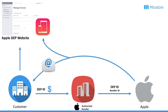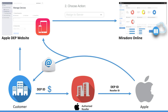As soon as the devices are registered with your DEP account, you can log into the DEP website, choose the devices, and assign them to an MDM server, for instance Miradol Online. What's really great about this is that this process actually happens before you physically receive the devices. So you could go into your Miradol Online account and assign the device to a user before the device even reaches your premises.